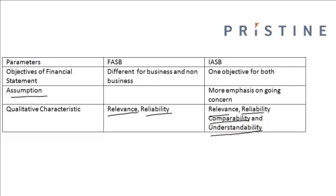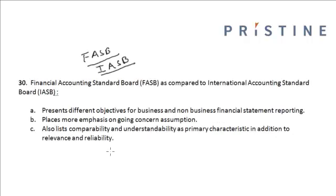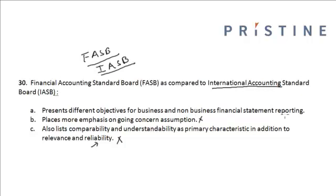After having gone through this table, let us come back to the problem. The second option — places more emphasis on going concern assumption — comes under the International Accounting Standard Board. Also listing comparability and understandability as primary characteristics is also under IASB, not FASB. However, FASB presenting different objectives for business and non-business financial statement reporting — this statement is correct.